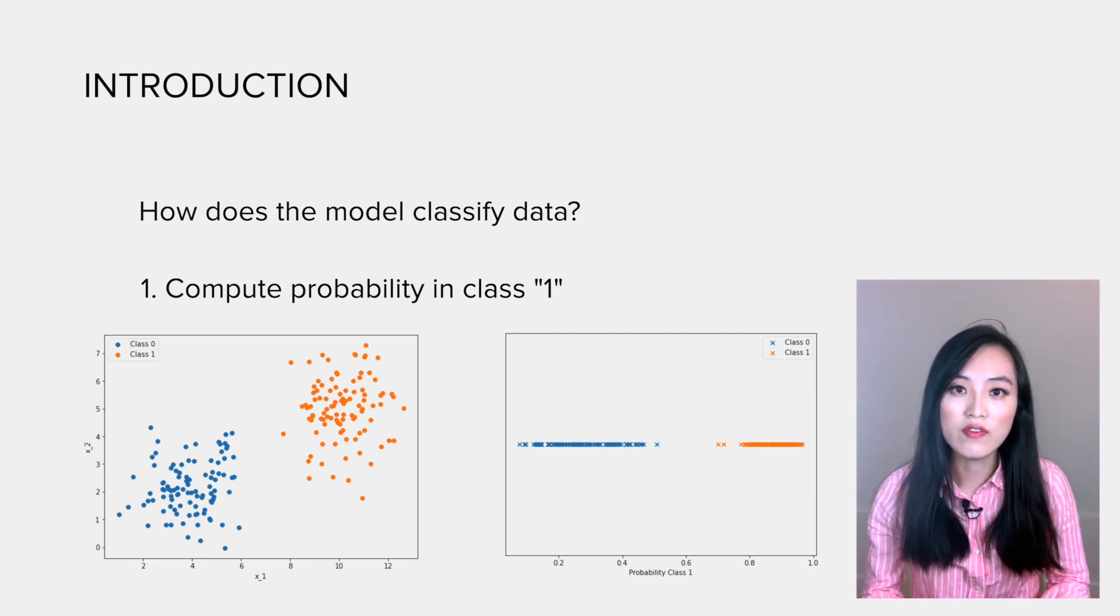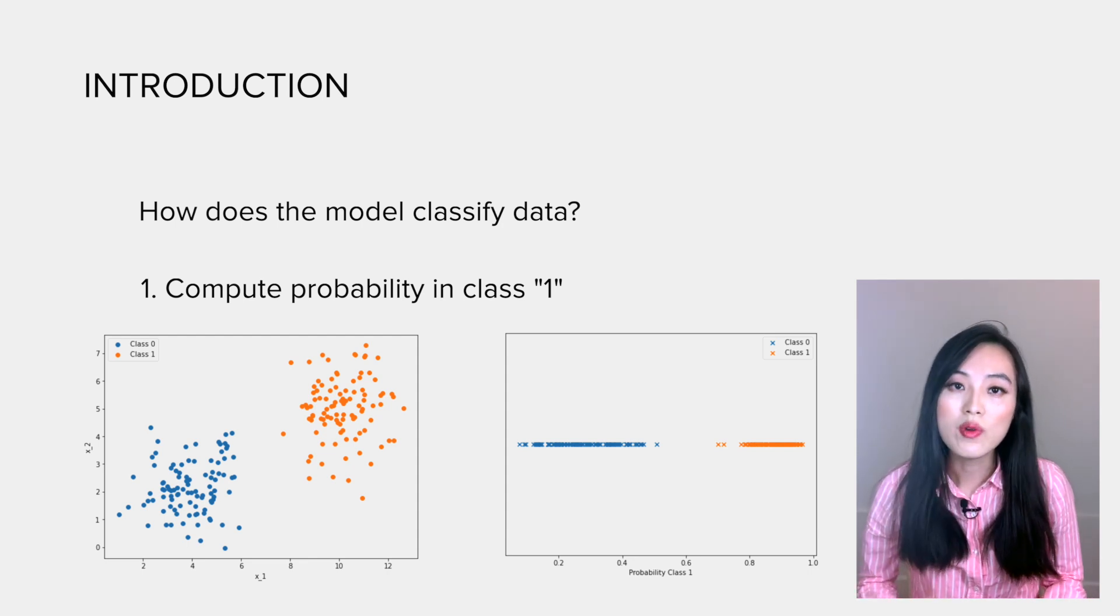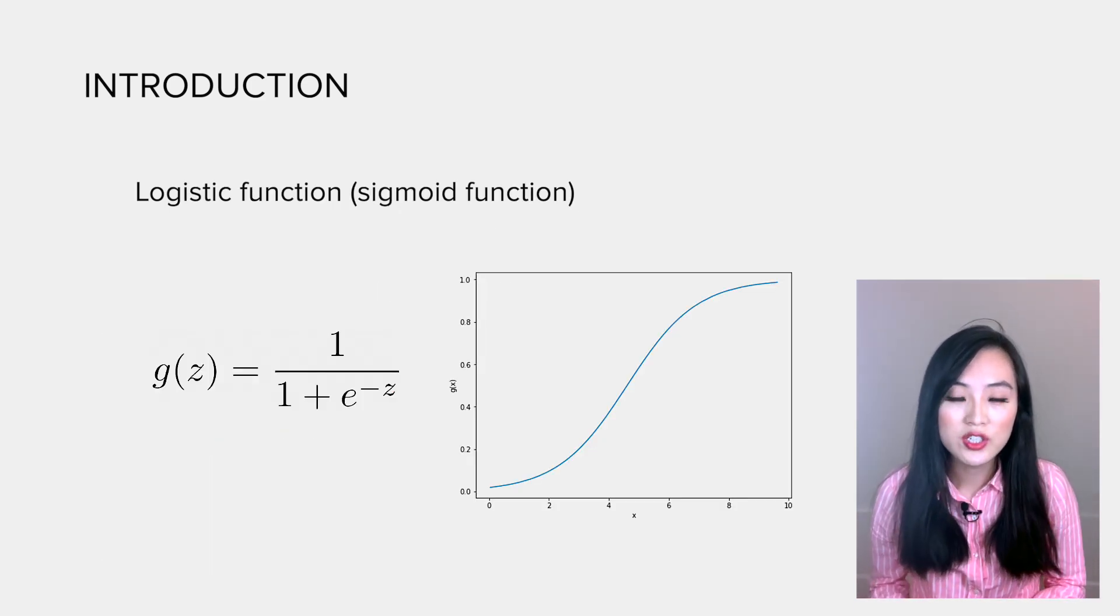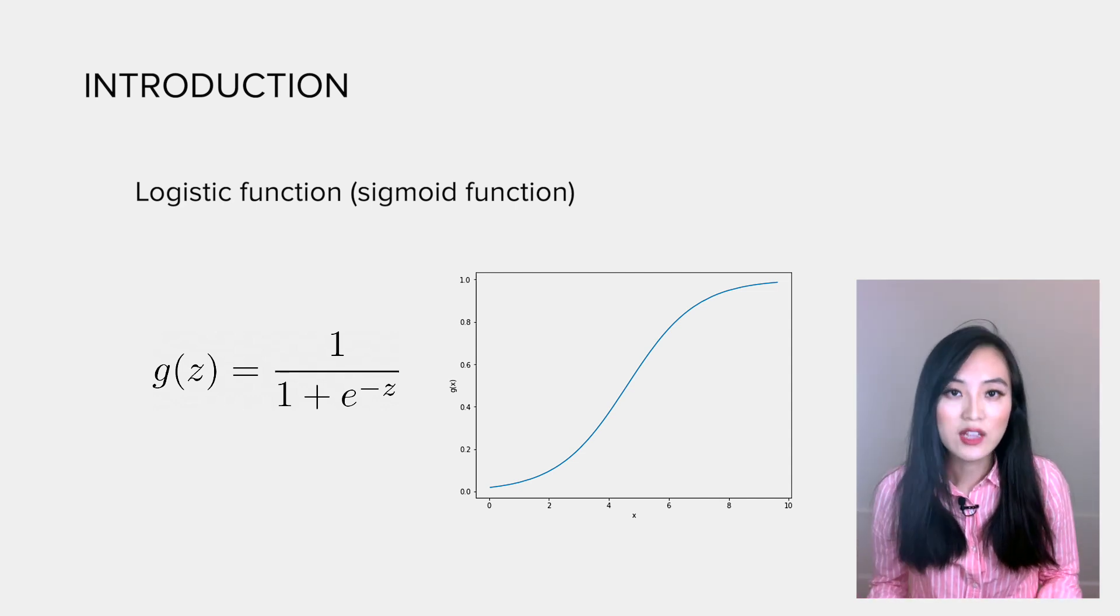It uses a function to project the linear combination of all features into scores between 0 and 1, representing the probability of being in class 1. This function is called a logistic function or sigmoid function. It looks like a big S and will map any value into the range 0 to 1.